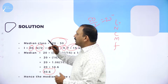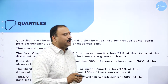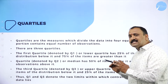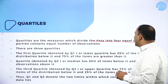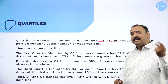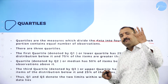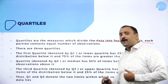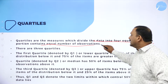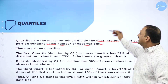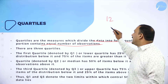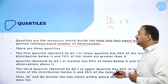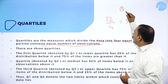Now let's talk about quartiles. What is a quartile and why is it important in statistics? Quartiles are measures which divide the data into four equal parts. Until now we talked about two parts, but now we divide data into four equal parts. There are three types of quartiles. The key point is that each part contains an equal number of observations — so if there are 12 observations, each part has 3. The first quartile is denoted by Q1.